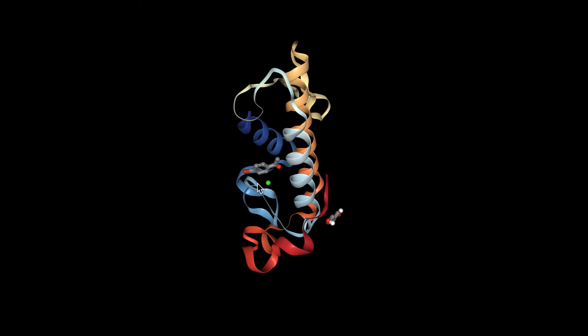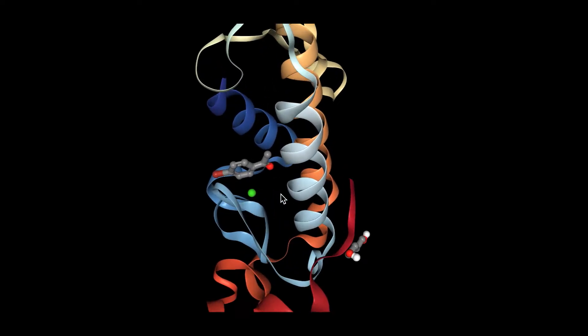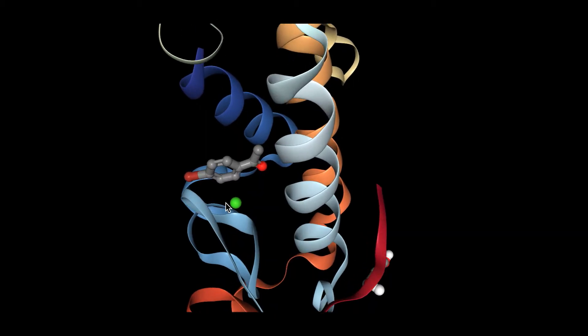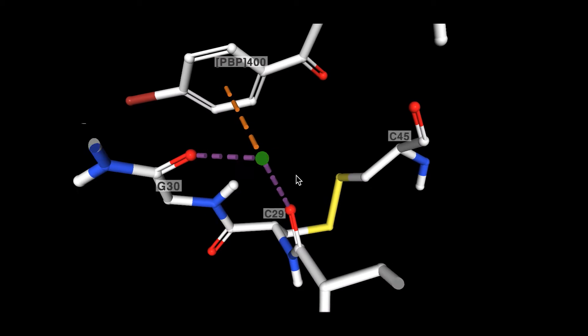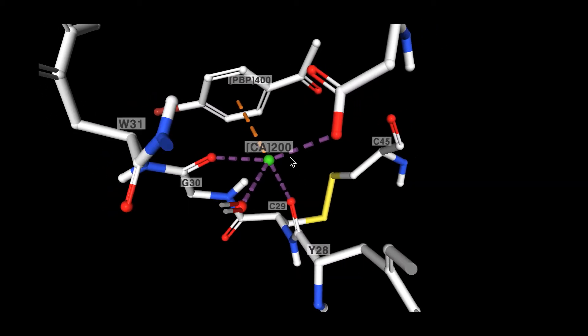This little green ion is the calcium cofactor I spoke about earlier. As you can see, it forms four non-covalent metallic interactions with the electronegative oxygens on four different residues on the protein. These residues form the calcium binding loop. This calcium ion stabilizes the interactions between nearby residues and allows for enzymatic function. The calcium ion in this particular structure also complexes with the aromatic ring of the last ligand present.